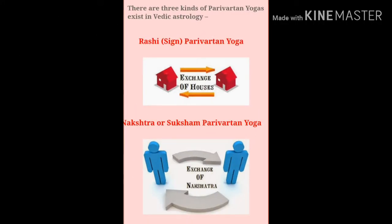One type of Parivartan Yog is where planets exchange houses — that is, say Jupiter is placed in Mercury's house and Mercury is placed in Jupiter's house at the same time. This forms a Rashi Parivartan Yog. Jupiter is comfortably placed in Mercury's house and Mercury is also comfortably placed in Jupiter's house. So if you have Jupiter's Mahadasha or Antar Dasha, Mercury will also get activated, or if you have Mercury's Mahadasha, Jupiter will also get activated and give results of the houses he owns as well as the houses owned by Mercury.